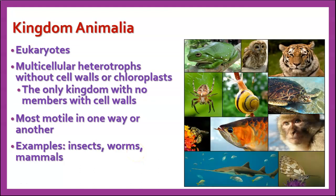Kingdom Animalia are also eukaryotes — multicellular heterotrophs without cell walls or chloroplasts. This is the only kingdom that has no members with cell walls; every other kingdom has at least some kind of cell wall on some of its members. Most are motile, meaning they can move around, although some are sessile when they become adults — they stick to one spot. Examples include insects, worms, mammals, birds, fish, spiders, sea anemones, and jellyfish.